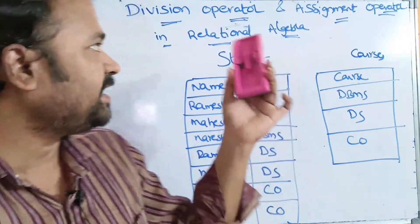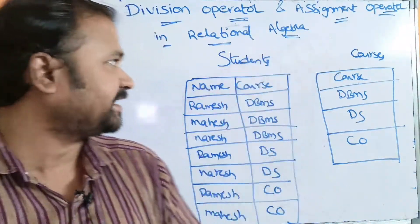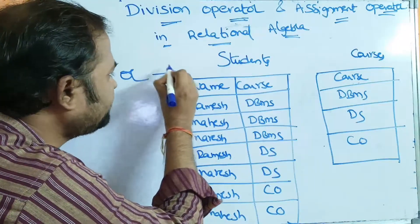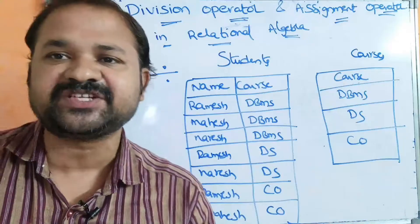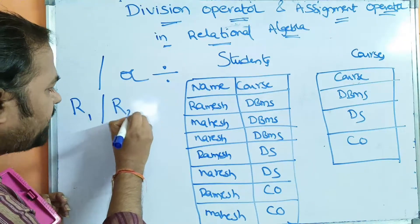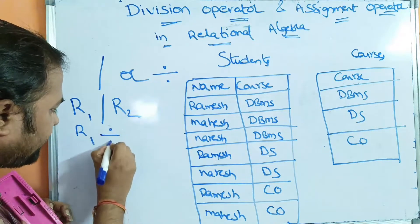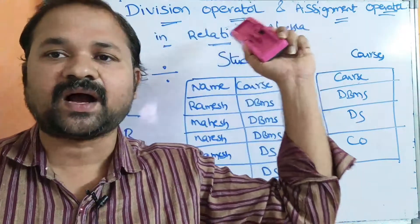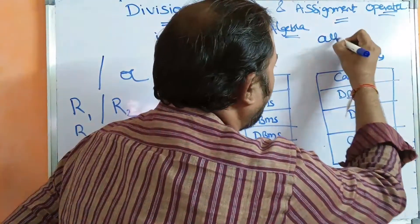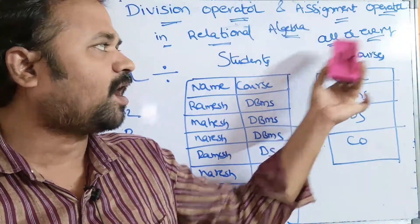Let us discuss the division operator and assignment operator in relational algebra. The division operator is denoted by a forward slash symbol or general division symbol. The notation for the division operator is: given two relations R1 and R2, we write it as R1 divided by R2. We can perform the division operator only when the query contains the words 'all' or 'every'.